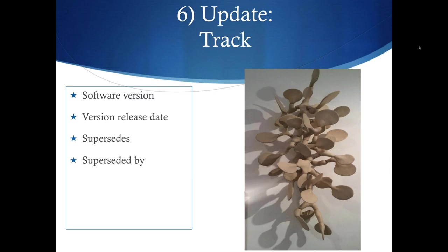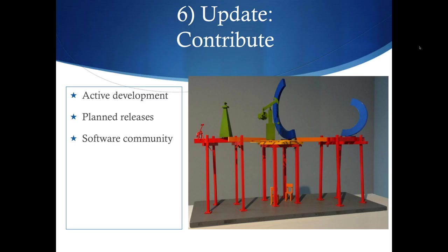The sixth category is metadata that helps others track new versions. Always state which DOI and description corresponds to which software version, its release date, what prior version it supersedes, and what future version is expected. You should also specify if the software is under development, planned major extensions, and whether there's a community where users can ask questions and help improve the software.